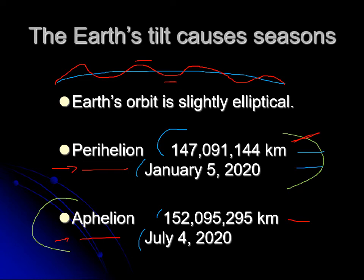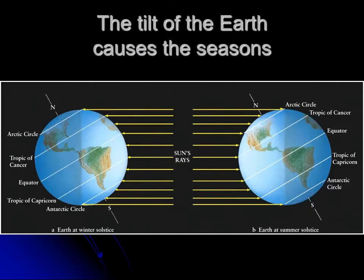It's the tilt that causes the seasons. At the winter solstice — winter in the northern hemisphere — the sunlight is hitting mainly the southern part of the Earth and the northern part gets less light. In fact, we spend more hours in darkness than in daylight. The daytime is when sunlight is warming you up, and at night you're radiating energy into space and cooling off. One day like that doesn't do much, but over two days, a week, a month, it gradually cools off.